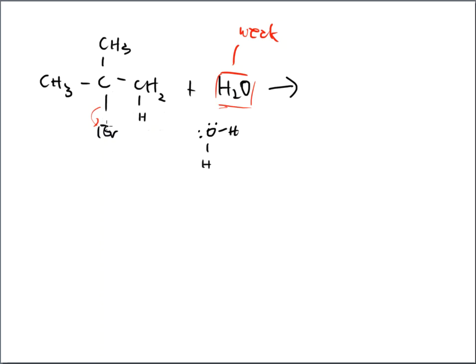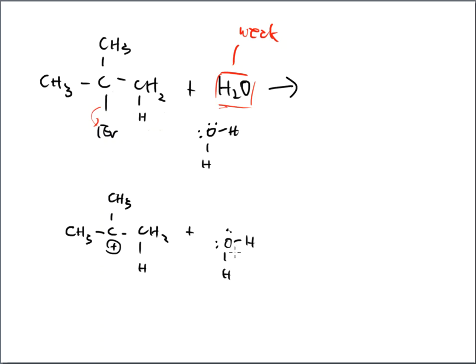In E2, the OH swooped in, ripped the hydrogen off, the double bond formed, and that persuaded the carbon to get rid of bromine — all in one step, no rearrangement. But in E1, we do see a rearrangement possibility because the carbocation forms first in a second step. In this case though, the carbocation doesn't need to rearrange: if it goes left it's primary, if it goes up it's primary, if it goes right it's primary. It's perfectly happy where it is.